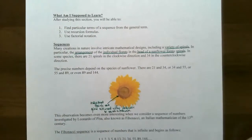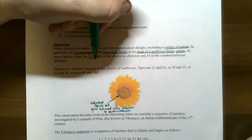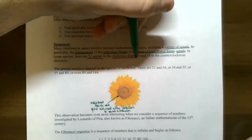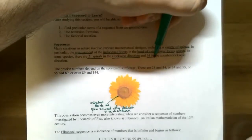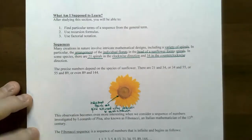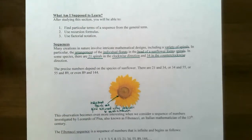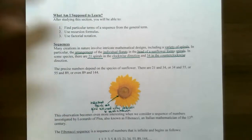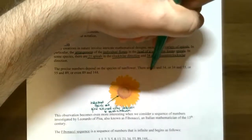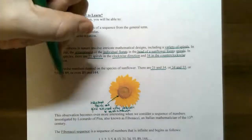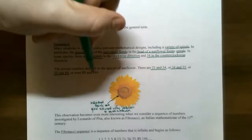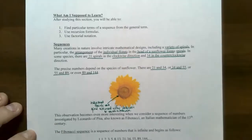If you count the number of florets on the clockwise rotation spiral or the counterclockwise spiral, you'll have numbers like 21 in the clockwise direction, and 34 if you trace outward counterclockwise. Looking at other types of sunflowers, flowers, seashells, or pinecones, these numbers keep coming up: 21 and 34, 34 and 55, 55 and 89, and even 89 and 144. These numbers keep coming up in nature.